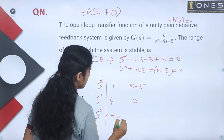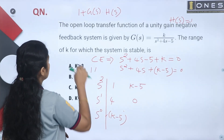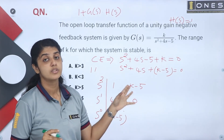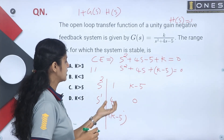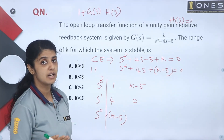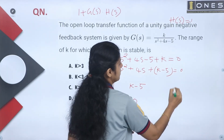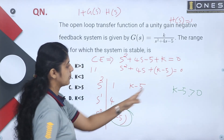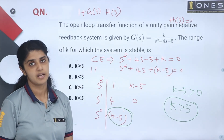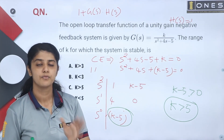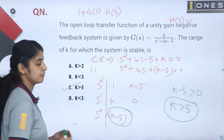Now we apply the stability condition. All elements of the first column must be positive: 1, 4, and k minus 5 must all be greater than 0. So k minus 5 greater than 0, which gives k greater than 5. The range of k for which the system is stable is k greater than 5. Answer: greater than 5.